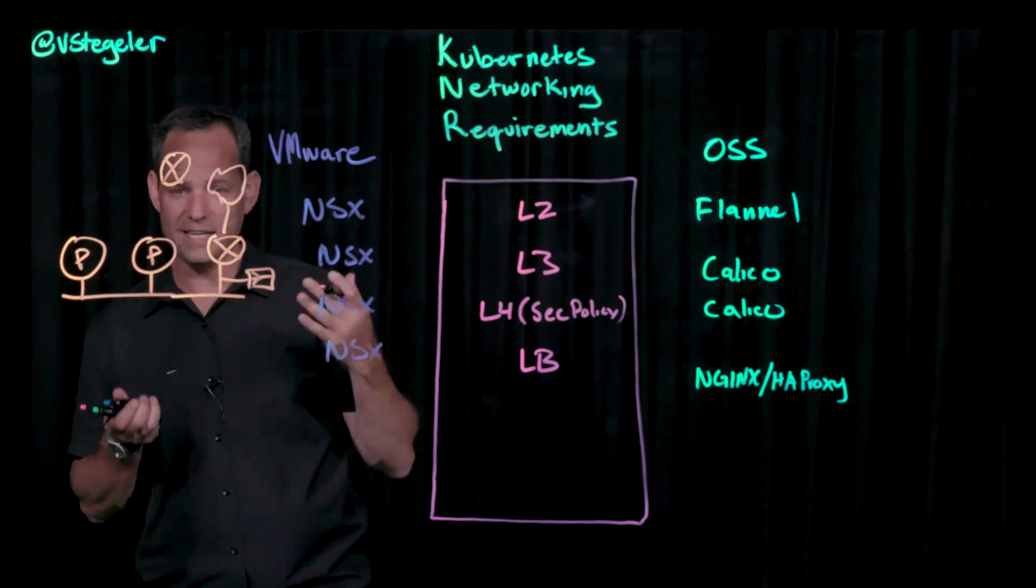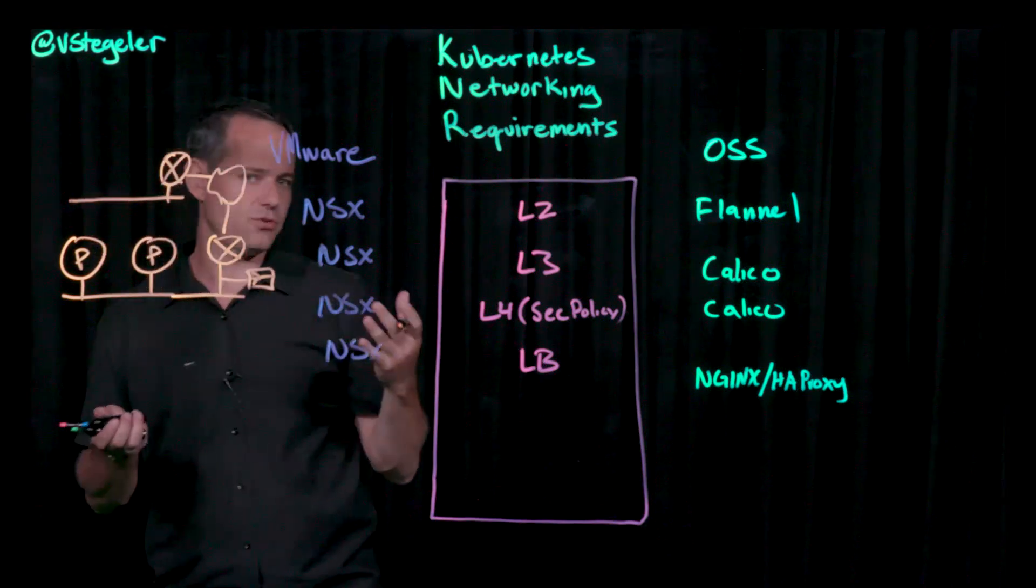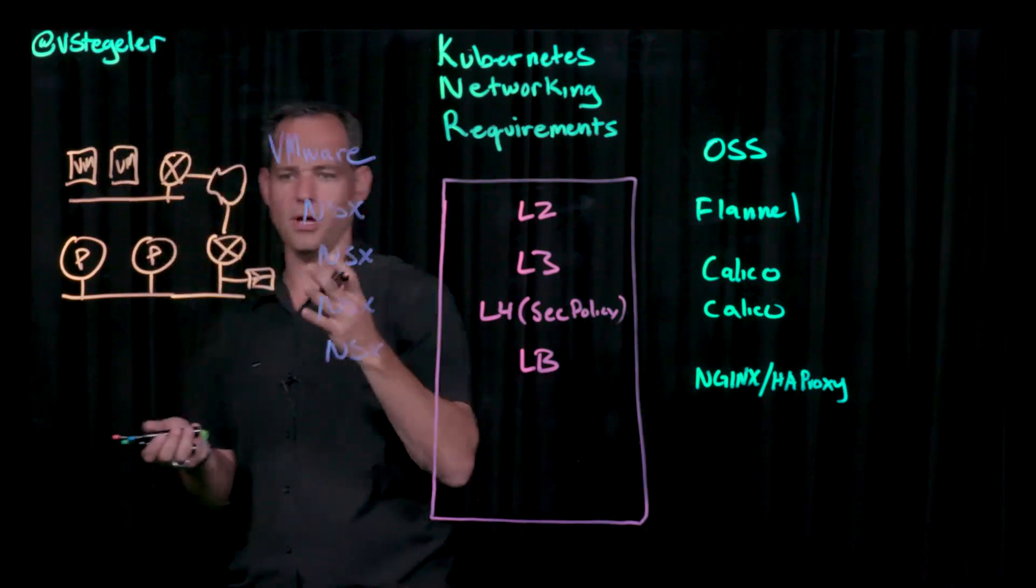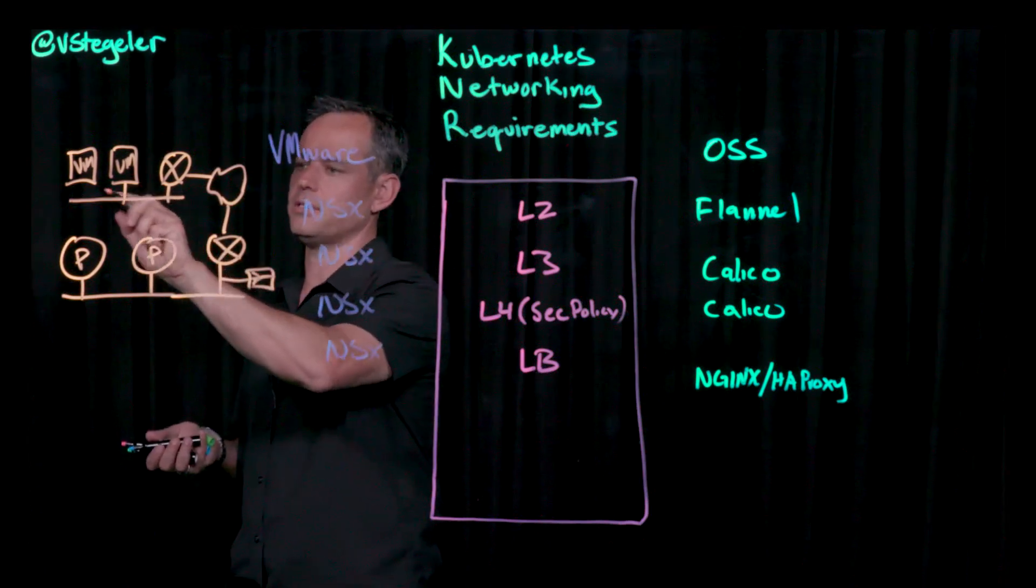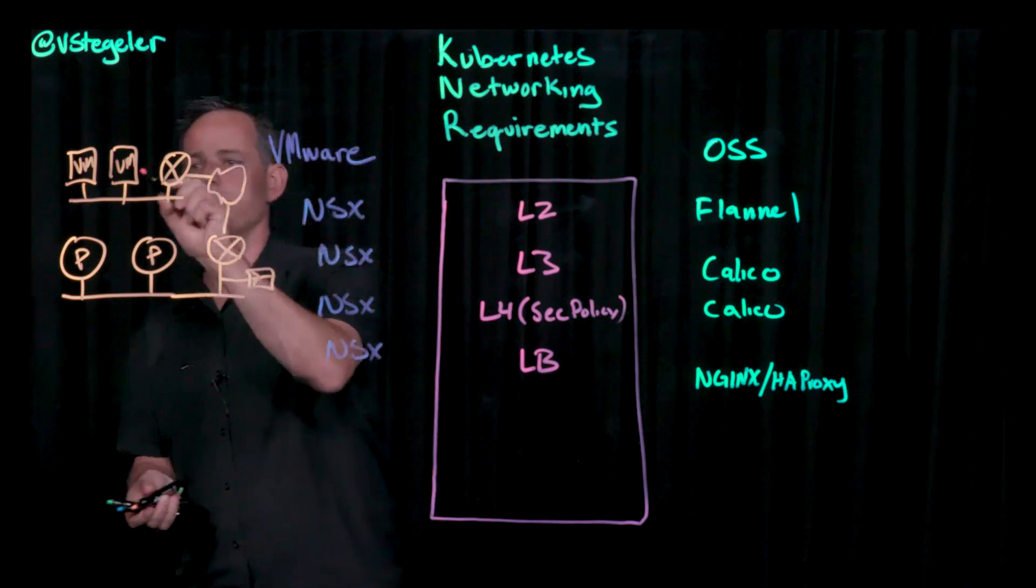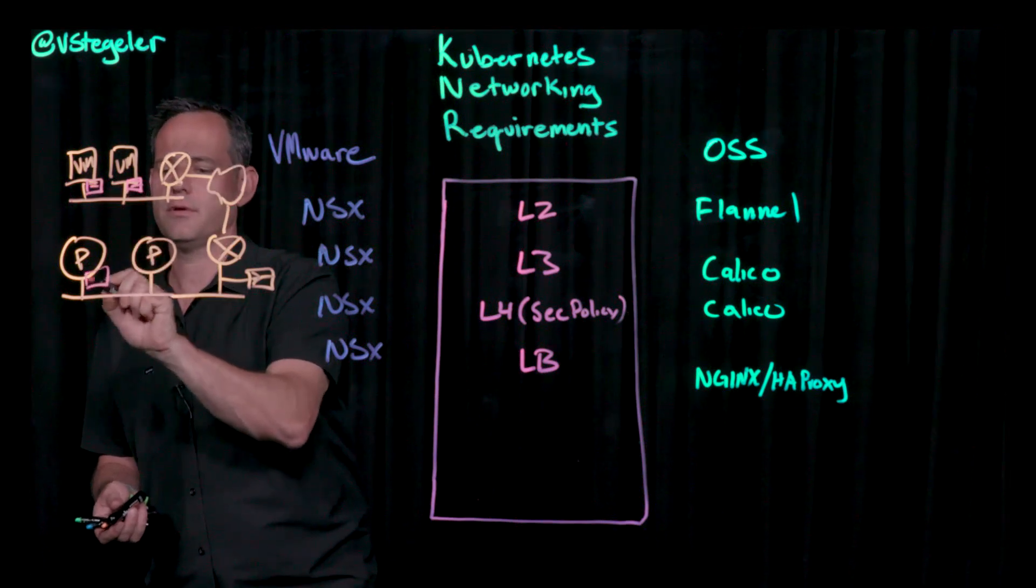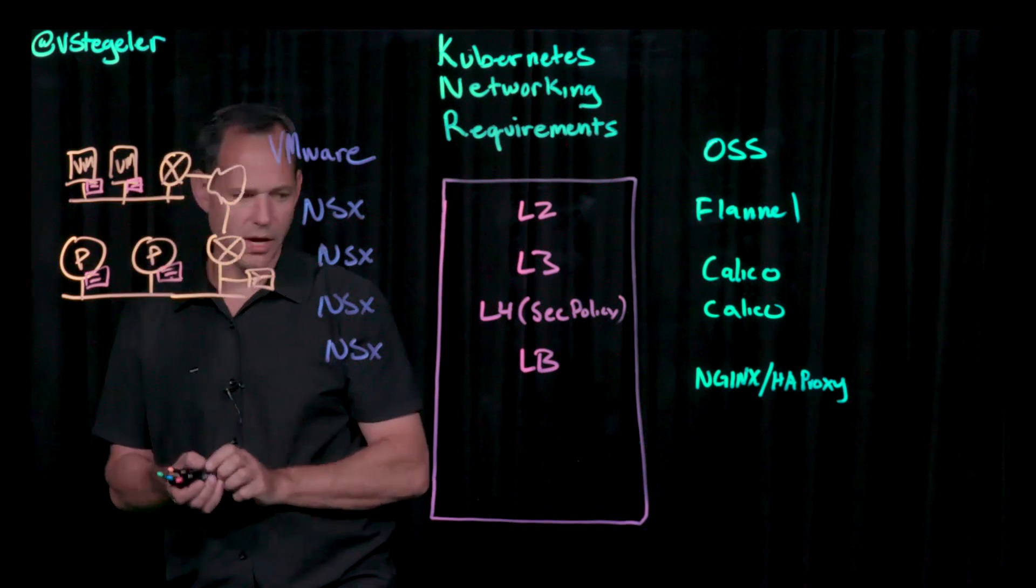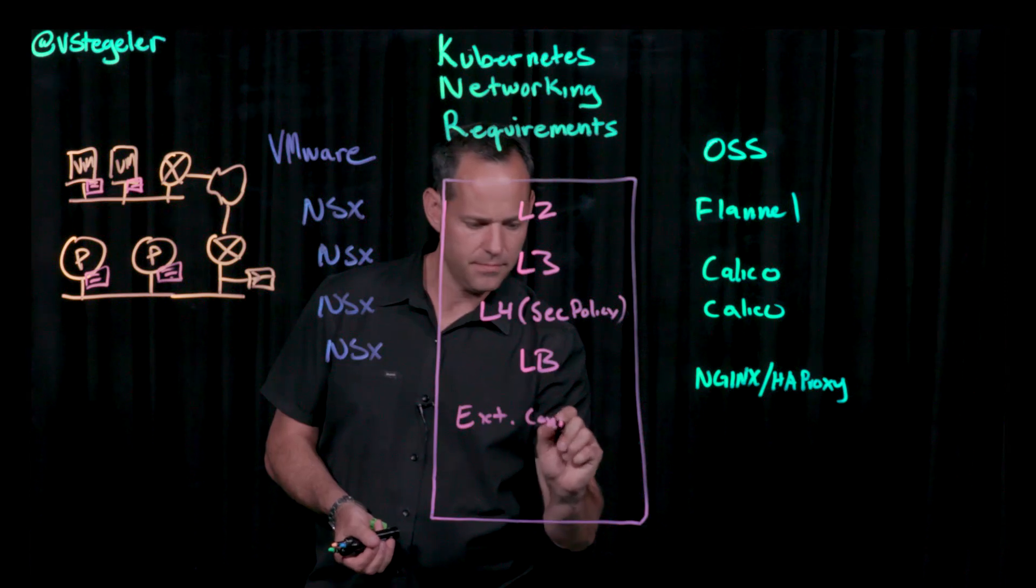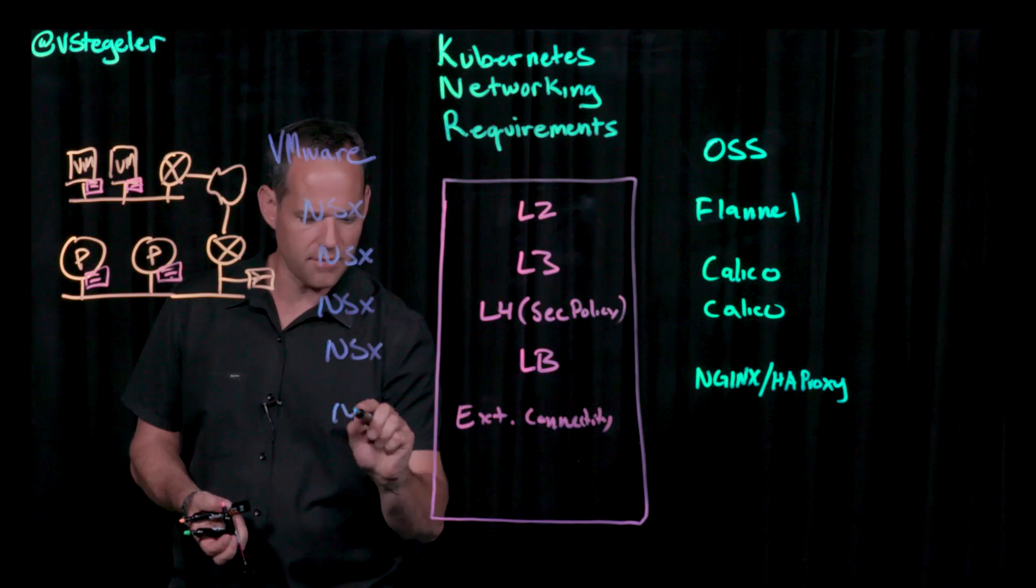So what we'll need to do, what might be nice to do here is really to, like security is a great example. Maybe if these are virtual machines here, I have a security policy that not only encompasses the pods in Kubernetes, but it could also encompass these virtual machines as well. And with NSX, I have the ability to provide micro-segmentation, not only at the virtual machine level, but also at the pod level as well. So in this case, let's just call this external connectivity.